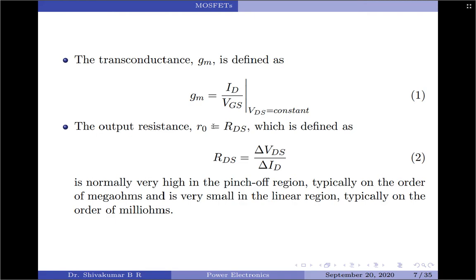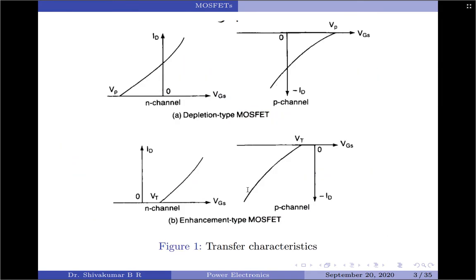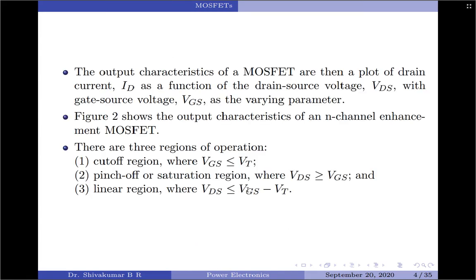The output resistance is normally very high in the pinch-off region, typically on the order of mega ohms, and very small in the linear region, typically on the order of milli ohms. For depletion type MOSFETs, the gate or input voltage could be either positive or negative, but enhancement type MOSFETs respond to a positive gate voltage only. Depletion type MOSFETs would be advantageous and simplify the logic design in applications requiring an AC or DC switch that remains on when the logic supply falls and VGS becomes 0.